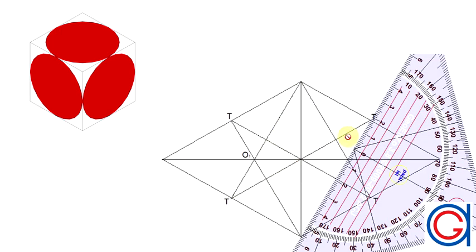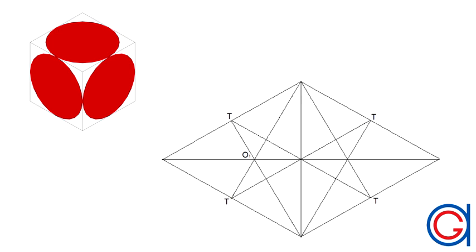Now that we have our first two centers of our oval, the second two centers O3 and O4 are the top and bottom vertices of the rhombus.